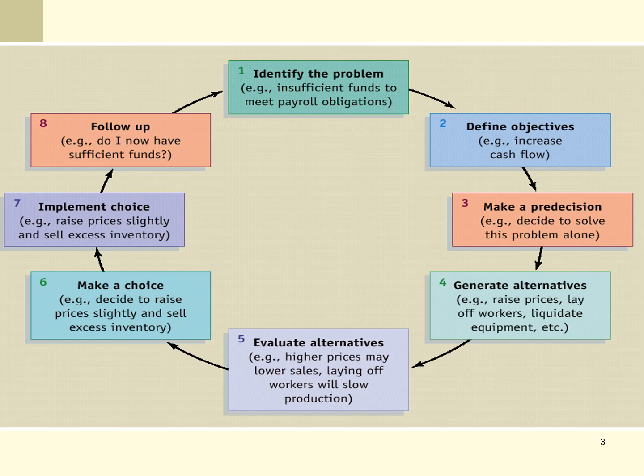Identifying the problem might require a little bit of time and research. Once we have the problem, we want to define the objective — what is a successful solution? In this case, increase cash flow, though there might be other objectives such as reducing payroll obligations. We then need to make a pre-decision: deciding to solve this problem — who needs to be involved in the problem-solving, who needs to make the decision, and what information is needed.